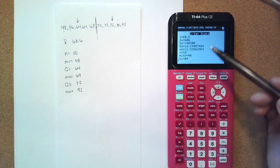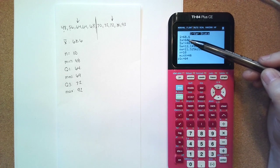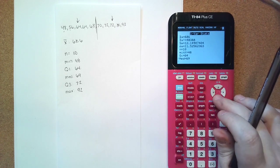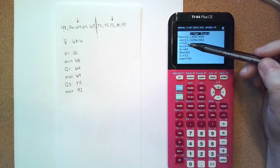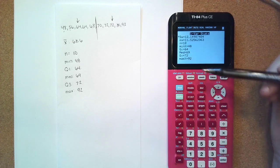And it gives us all the information we need, gives us our mean, our summation, our standard deviations, how many numbers we have, and then our five number summary. So that will help us with our box plot.